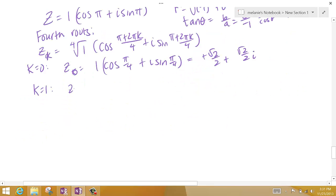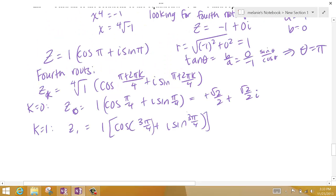When k is 1, I have z sub 1 and that's 1. Cosine—if I put in a 1 here, I get pi plus 2 pi, I get 3 pi over 4, plus i sine 3 pi over 4.